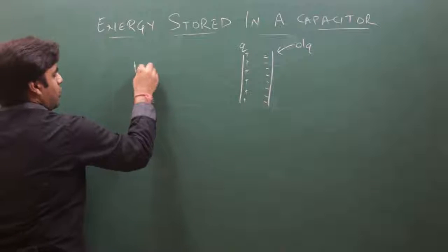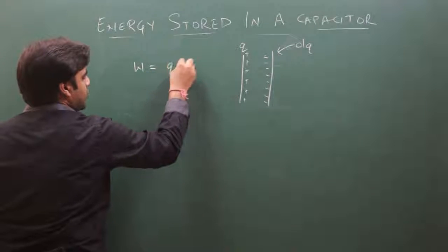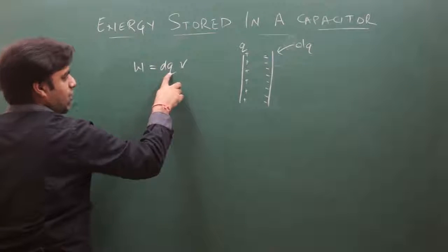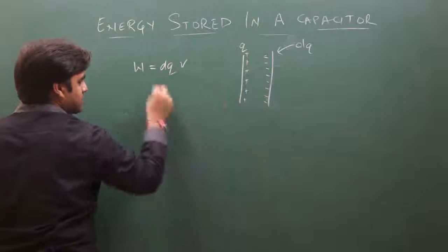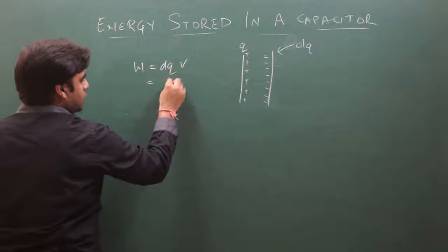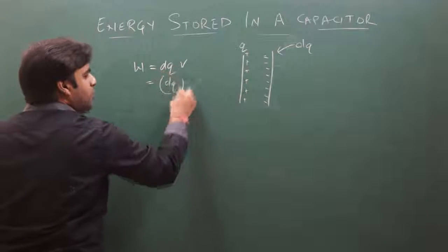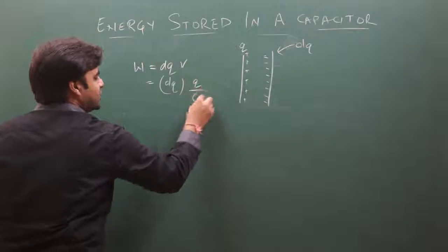The formula for this work is: dW equals the charge dQ multiplied by V, the potential difference between the plates. So dW equals V times dQ.